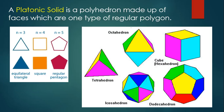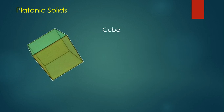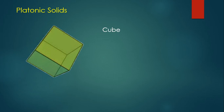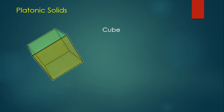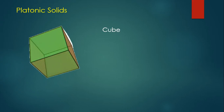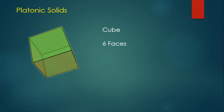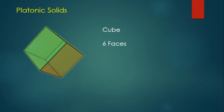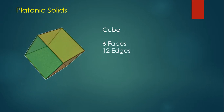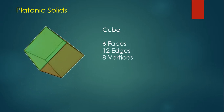There are only five platonic solids that can be made: the cube, the octahedron, the tetrahedron, the icosahedron, and the dodecahedron. The cube is a platonic solid because all six of its faces are made up of squares, and squares are regular polygons — they have equal sides and equal angles. A cube also has 12 edges and eight vertices.